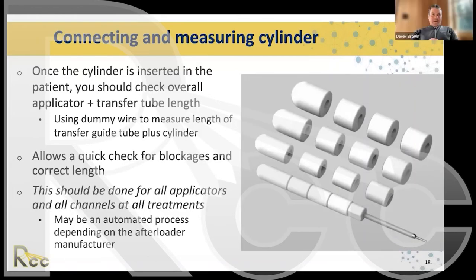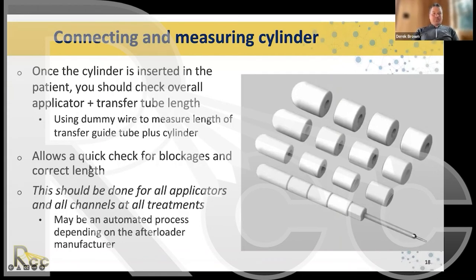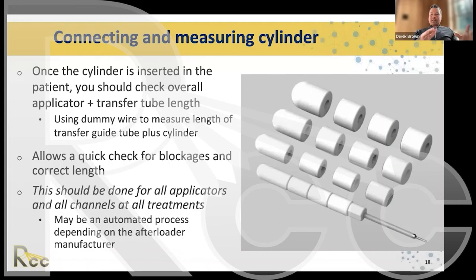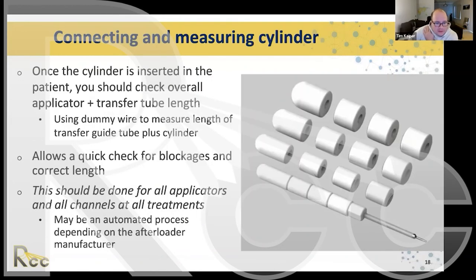After the cylinder is inserted and immobilized, we check that the overall applicator plus transfer tube length is correct using a dummy wire and measurement system. This also checks for blockages and confirms the transfer guide tube is connected appropriately. This must be done for all applicators and all channels before every treatment, ensuring the source will not get stuck and that the length matches what is in the treatment planning system.